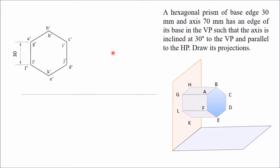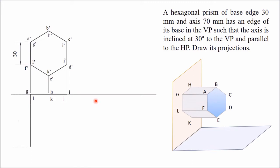Similarly, mark these points as well. Next, you can get the top view by projecting from the front view — I have drawn projectors. This base is kept in the VP, therefore this base will be visible in the xy line. So draw one line representing the base: G, H, I, J, K, L. Mark these points. The length of the axis is given as 70 mm, so from G, draw one line perpendicular to the xy line and having a length of 70 mm. You can draw the other two lines of the same length and close the rectangle. This way you have completed the top view.